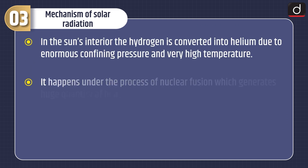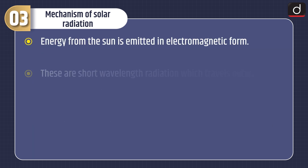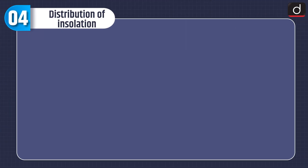Regarding the mechanism of solar radiation: in the sun's interior, hydrogen is converted into helium due to enormous confining pressure and very high temperature. This happens under the process of nuclear fusion, which generates a huge quantity of heat. This heat is transported to the outer surface of the sun through convection and conduction. Energy from the sun is emitted in electromagnetic form as short wavelength radiation, which travels outward in a radial manner. The heat inside the sun is more or less constant, and so is the insolation received on the earth.